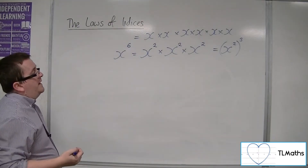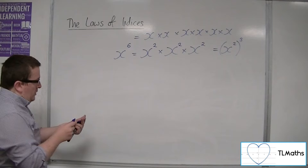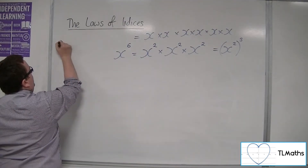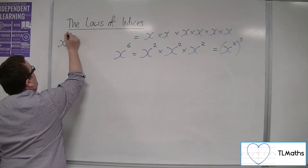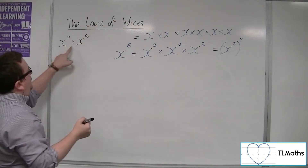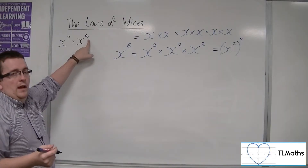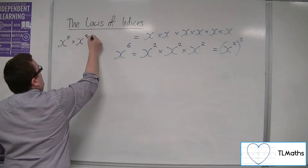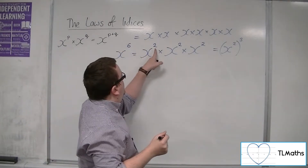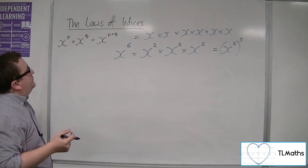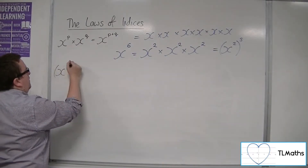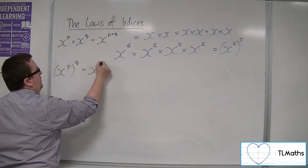So the indices there multiply together. The two laws of indices worth writing down: if I've got two values with the same base number, using p and q as the indices, so x to the p times x to the q — where p and q may or may not be the same value — this is the same as x to the p plus q. That's where this concept of 2 plus 2 plus 2 making the 6 is coming from. And if I've got x to the p in a bracket to the q, that's x to the p times q.